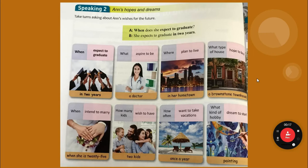Anne is in a university and she's talking about her life, what she wants to have, what she wants to do. When does she expect to graduate? 'Expect to' means she believes she will do that. She expects to graduate in two years. What does she aspire to be? 'Aspire' means that you want to — it's your dream. She aspires to be a doctor.